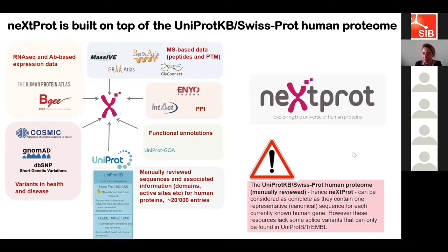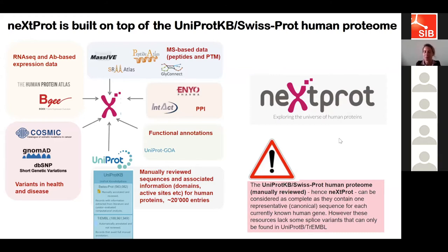As an important disclaimer: because we build neXtProt on SwissProt, our sequences are exactly the same as the ones you find in SwissProt. We don't have more sequences than SwissProt — we just add more information on the same sequences. SwissProt and neXtProt are considered complete in terms of human genome because they contain at least one representative sequence per known human gene.